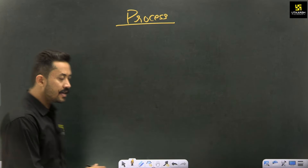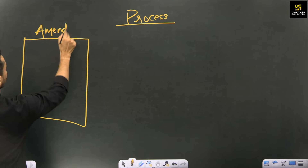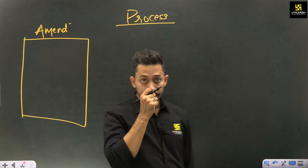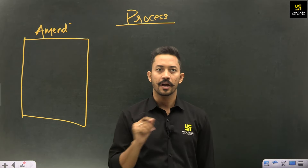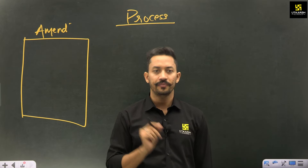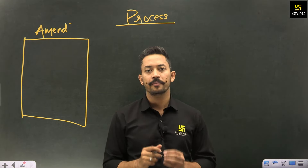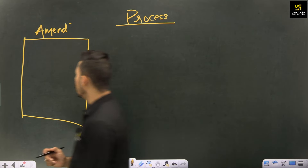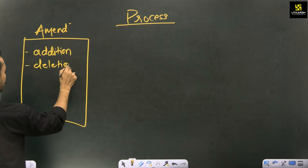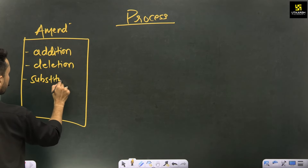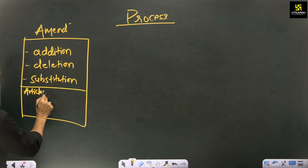Before discussing the process, let us clarify what we actually mean by amendment of the Indian constitution. The Indian constitution was enforced and came into force on 26th January 1950. That was our original constitution. Any kind of change in this constitution — whether addition, deletion, or substitution — constitutes an amendment. The constitution consists of articles, parts, schedules, and a preamble.